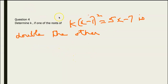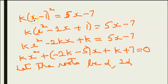Determine k if one of the roots of k(x-1)² = 5x - 7 is double the other. Expanding: kx² - 2kx + k = 5x - 7, or kx² + (-2k-5)x + (k+7) = 0. Let the roots be alpha and 2alpha.